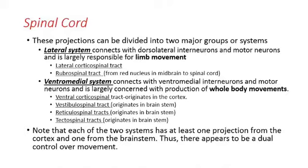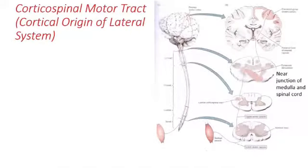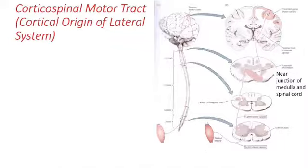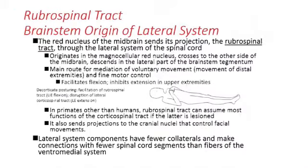This is a diagram of the corticospinal motor tract going from the primary motor cortex, with pathways going through the internal capsule and basal ganglia, then down near the junction of the medulla and the spinal cord, where those pathways cross over to the other side. That's how we get contralateral control of body movements. In contrast, the rubrospinal tract is the brain stem origin of the lateral system to innervate musculature of the body.